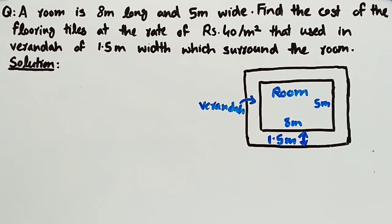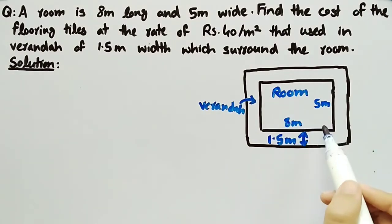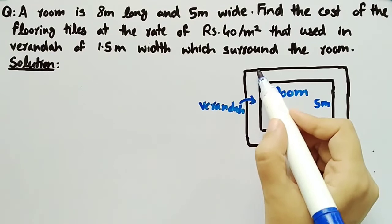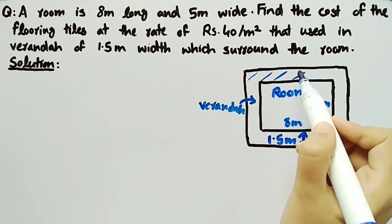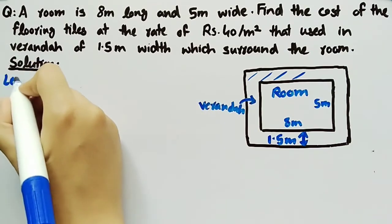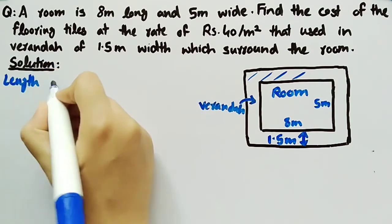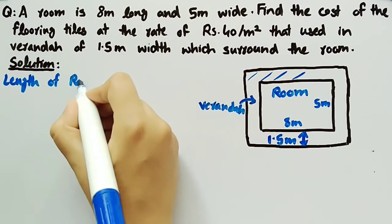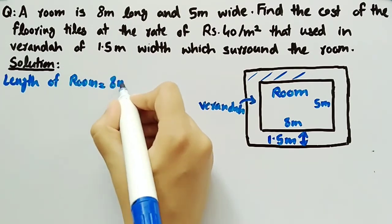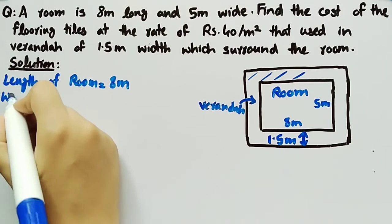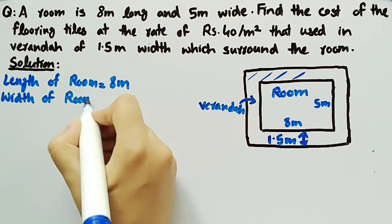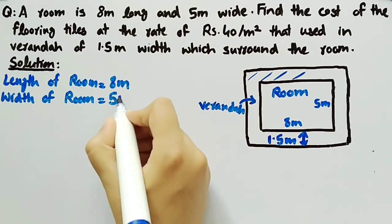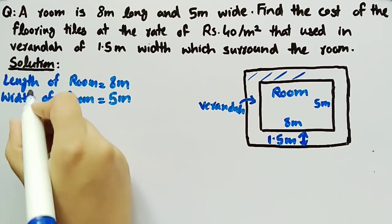Coming towards its solution, from the figure we can see that the inner rectangle represents the room and the outer border represents the veranda. Now we will write the given data: length of room is equal to 8 meter and width of room is equal to 5 meter.